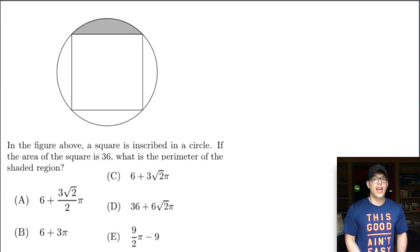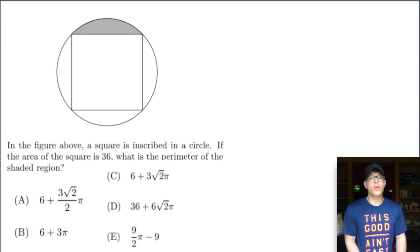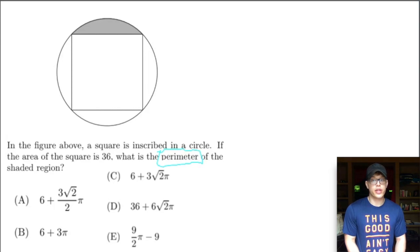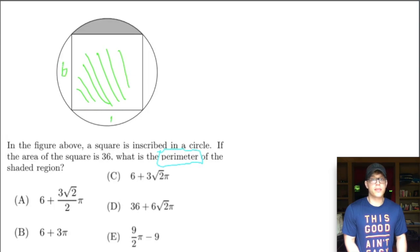Let's see our next problem — we're halfway done. In the figure above a square is inscribed in a circle. If the area of the square is 36, what is the perimeter of the shaded region? They're kind of tricking you here — usually with a shaded region they ask for area, but this question asks for perimeter. Since the area of the square is 36, the side lengths must be 6, because 6 times 6 is 36. So the bottom part of our shaded region is 6.